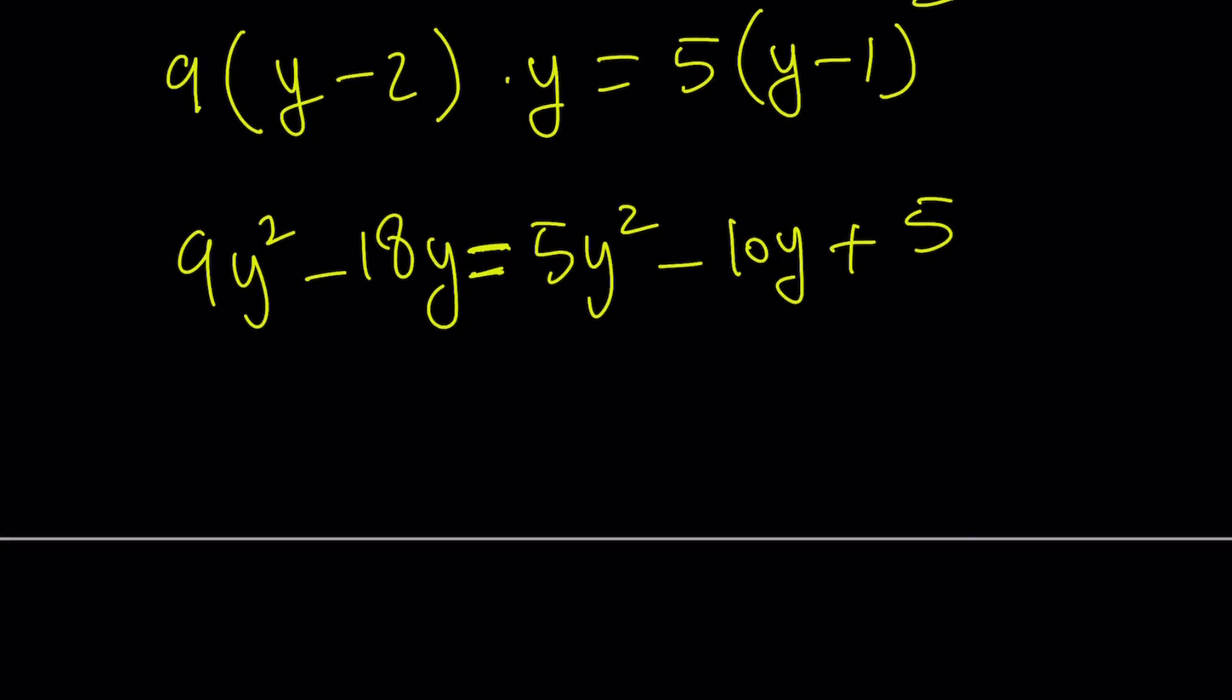4y squared, minus, and you'll probably recognize some of these coefficients from before, 4 minus 8y, and then minus 5 is equal to 0. Subtract this, subtract that, and subtract that. Make sense? So how do you solve this equation?